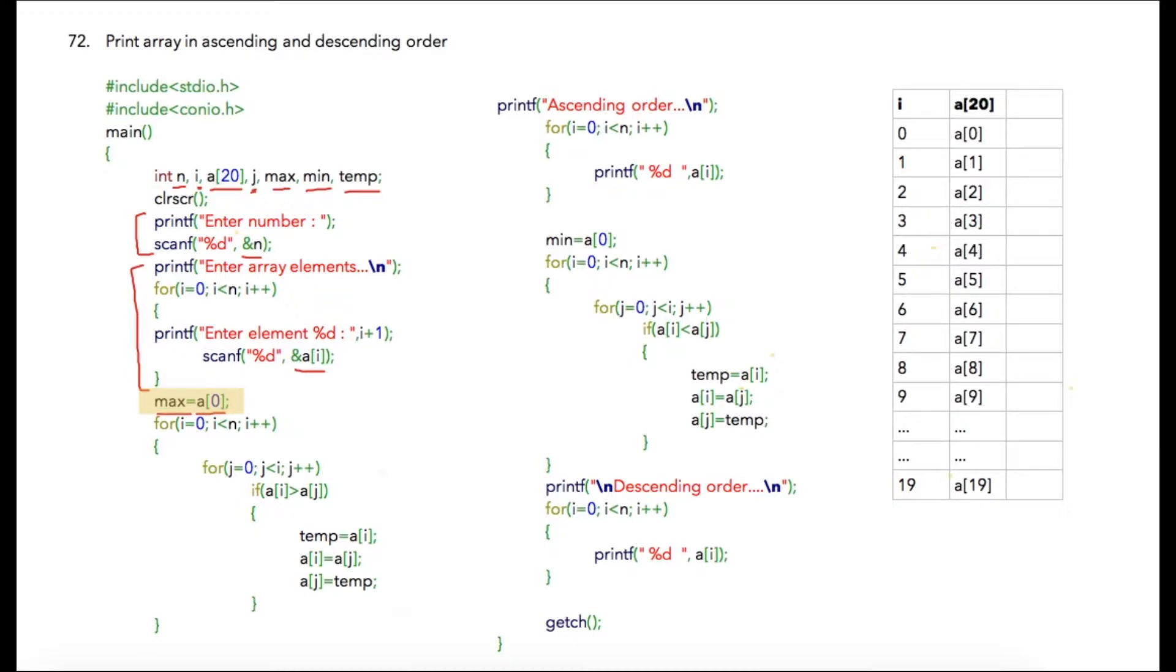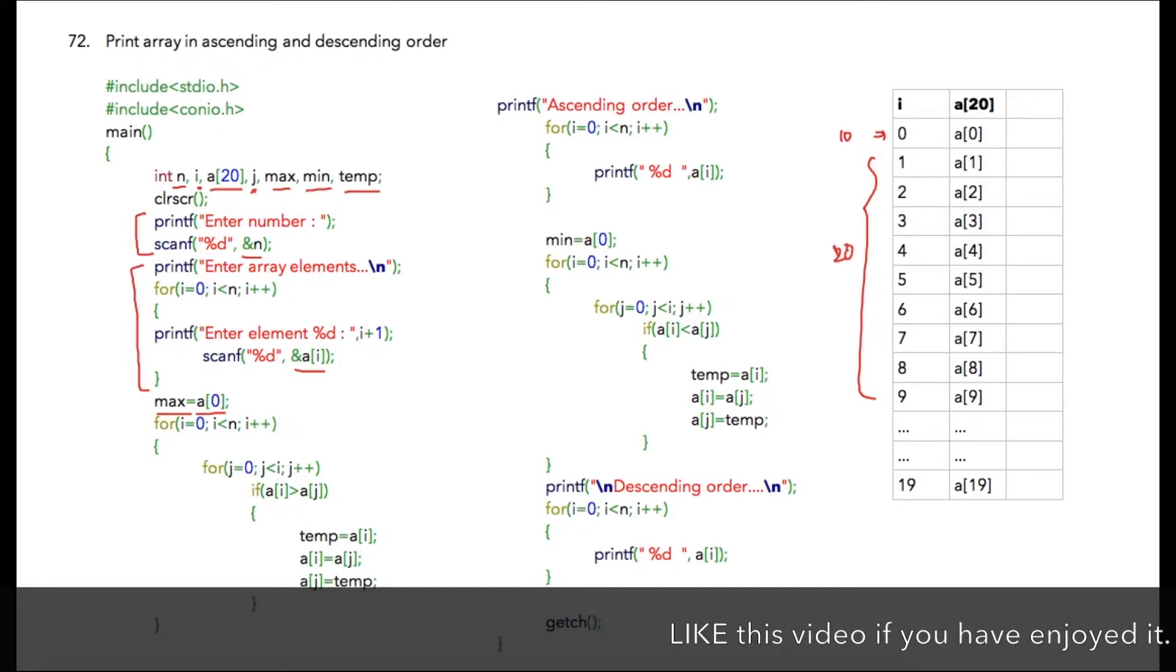The logic for this program is that we need to check each value with the rest of the elements in the array. If we find any maximum number, then we need to swap those values. For example, suppose 10 was a[0] and somewhere a[4] is 20, then we need to swap these values. We are running two for loops on the same array elements - one is the loop of i and the second is the loop of j.